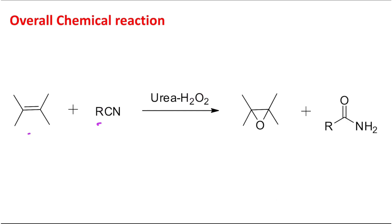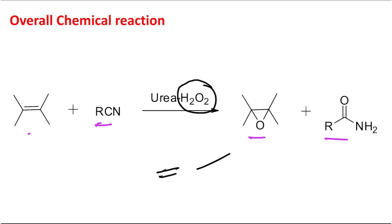Now let's come to the main topic. The overall reaction is: alkene reacts with RCN (a nitrile), which produces an epoxide and an amide. The unique thing here is that the oxidant is hydrogen peroxide. However, hydrogen peroxide cannot oxidize a simple alkene to the corresponding epoxide because hydrogen peroxide is electron-rich.